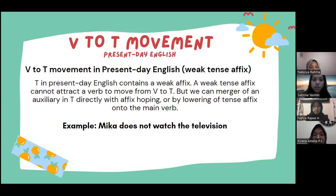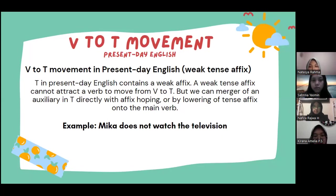The next material will be continued by my partner, Natasha. The next analysis is still V to T movement, but in present-day English. T in present-day English contains a weak affix. A weak tense affix cannot attract a verb to move from V to T, but we can merge an auxiliary in T directly with affix hopping, or by lowering of the tense affix onto the main verb. The sentence for the second example is: Mika does not watch the television.